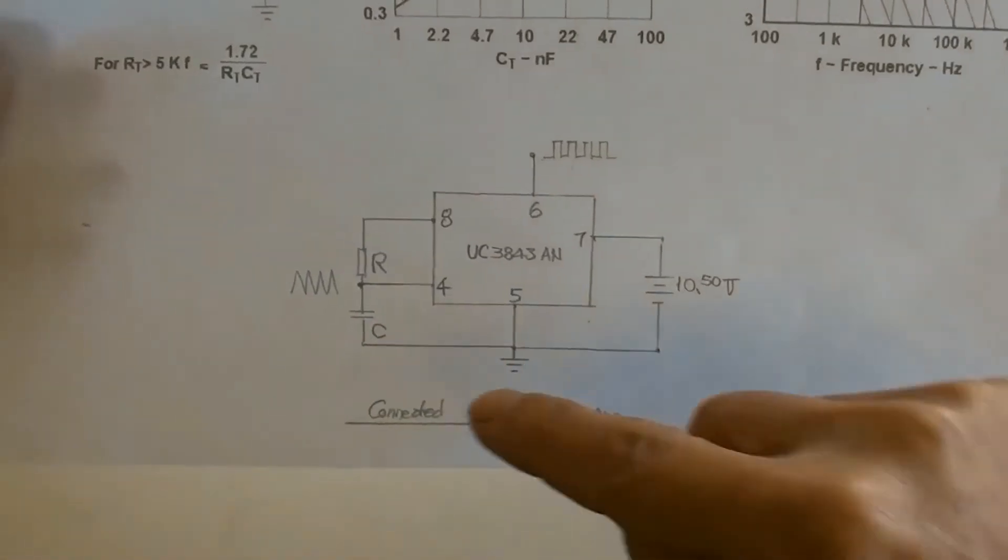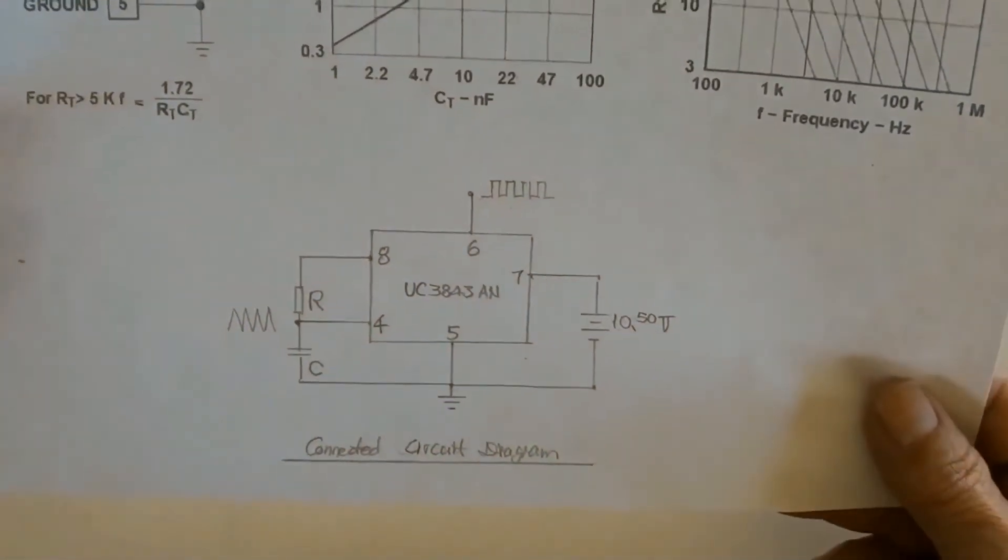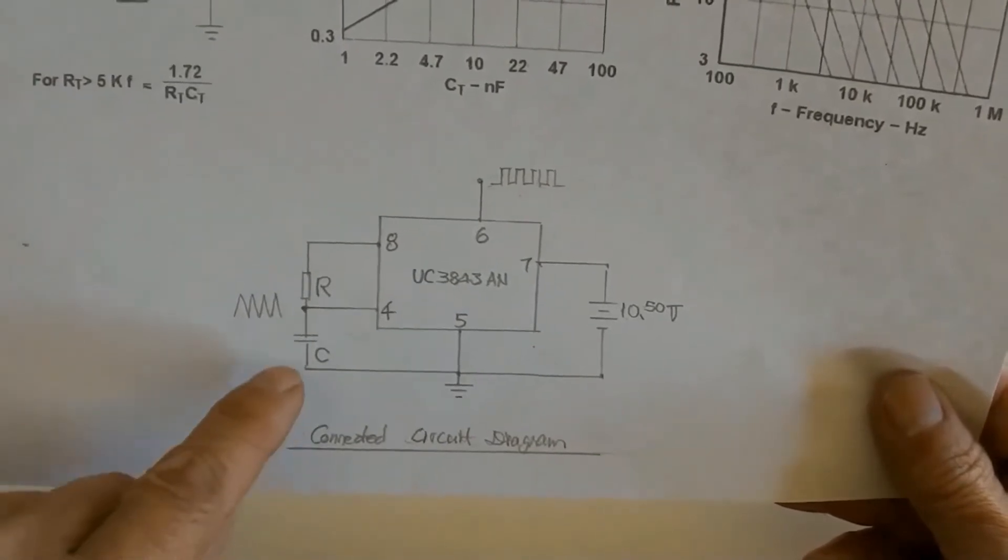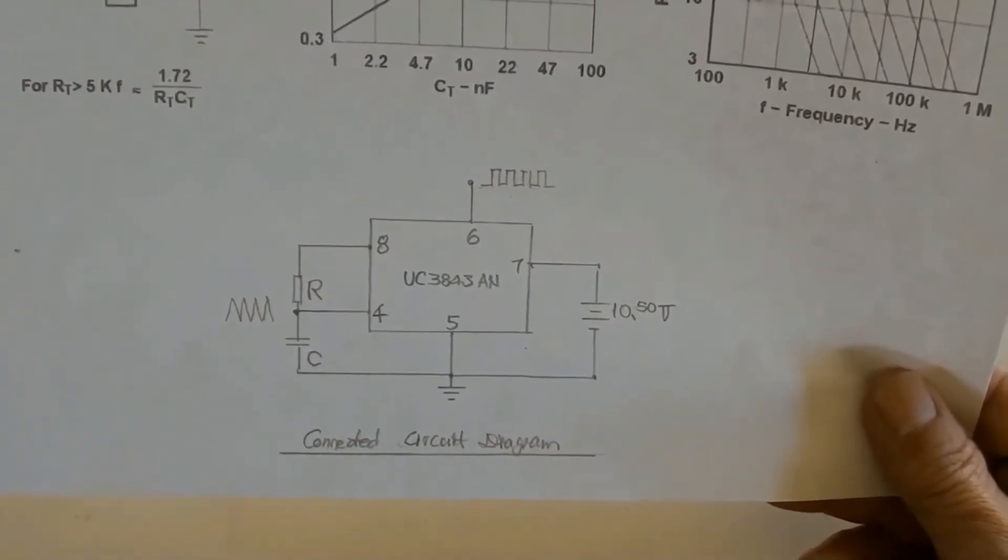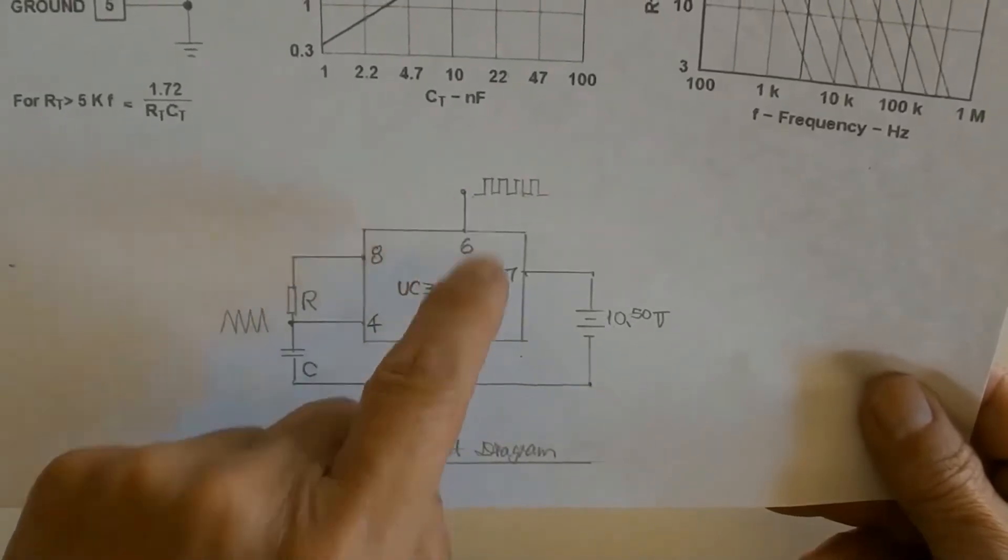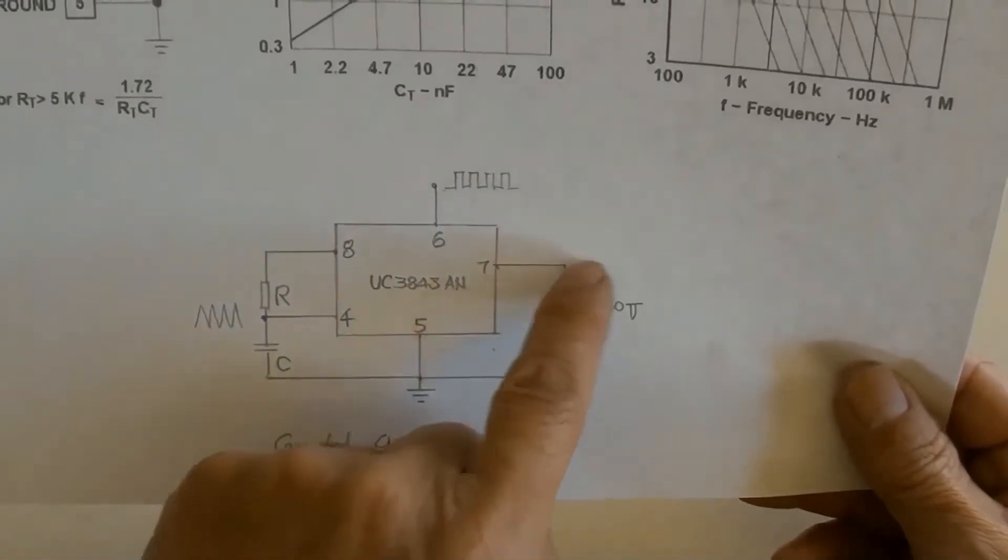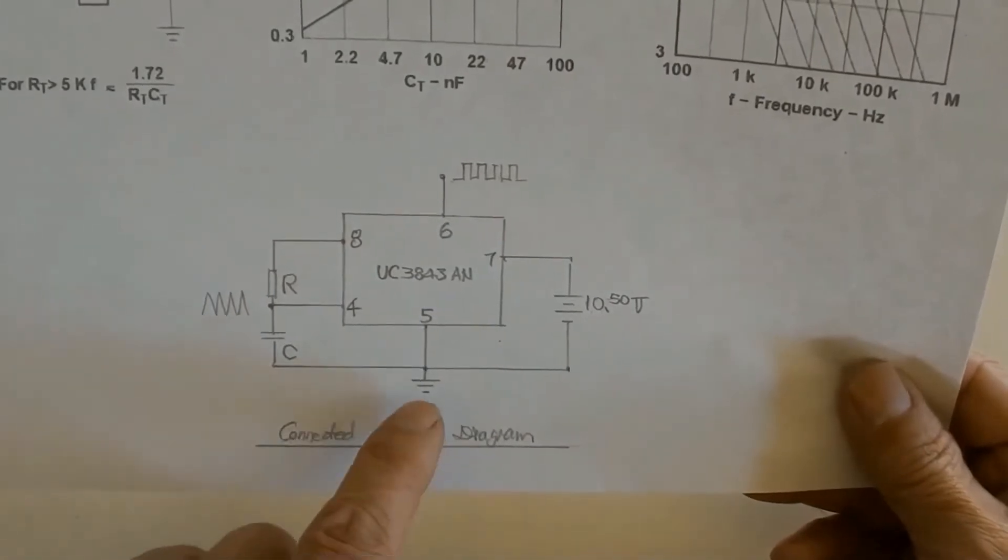This is a simple frequency generator circuit diagram. R and C are here. Terminal 6 is output. Terminal 7 is VCC for power supply. And Terminal 5 is ground.